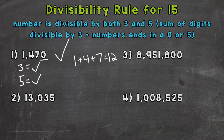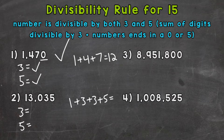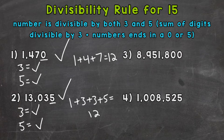On to number two: 13035. Let's find the sum of the digits — one plus three plus three plus five. One plus three is four, plus three is seven, plus five we get 12 again, just like number one. And as we talked about, 12 is divisible by three, so our original number is divisible by three. 13035 ends in a five, so it's divisible by five. Our number is divisible by both three and five, therefore divisible by 15.